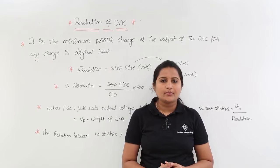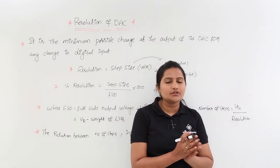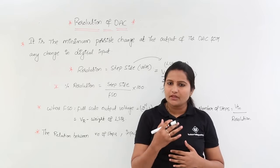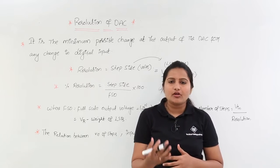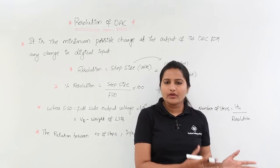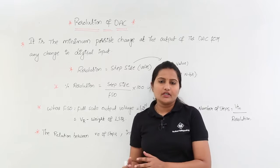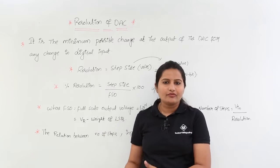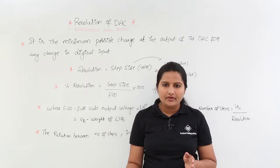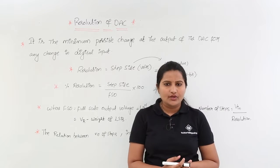In this class we are going to discuss about resolution of DAC, that means resolution of digital to analog converter. Resolution is nothing but the minimum possible change at the output of DAC for a change in digital input. For DAC, we are giving some digital data which it converts into some analog form. The minimum change at the output of DAC for a change in digital bit is called DAC resolution.